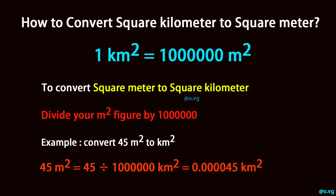To convert square meters to square kilometers, divide your square meter figure by one million. Example: convert 45 square meters to square kilometers. 45 square meters equals 45 divided by one million square kilometers, which equals 0.000045 square kilometers.